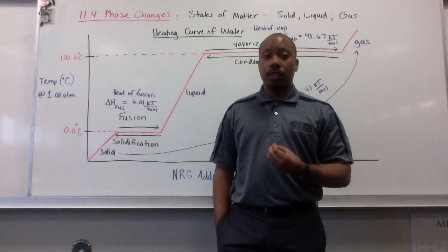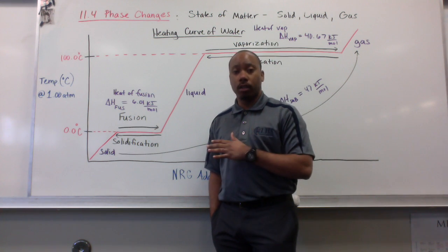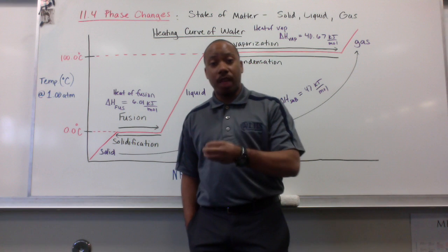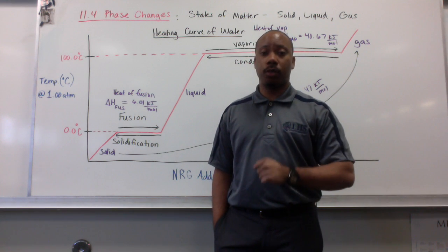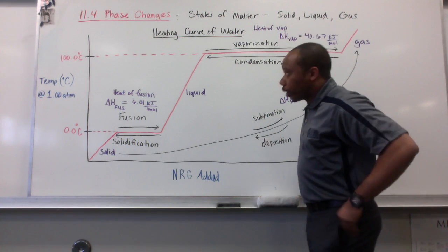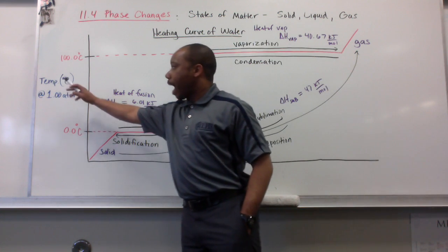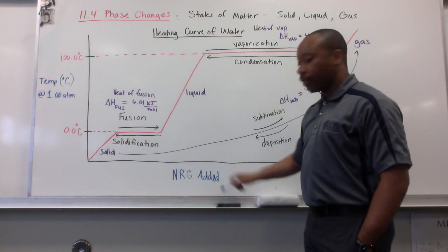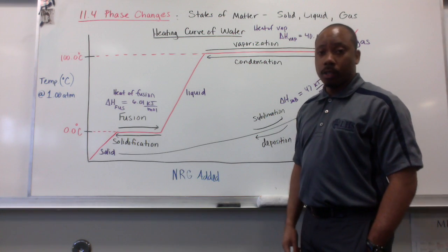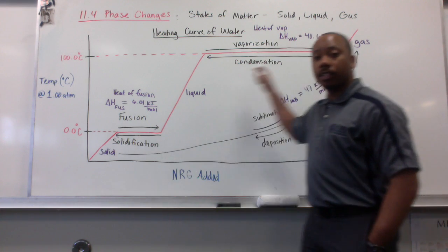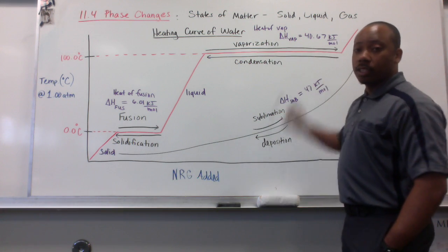Our example we're going to use today is a heating curve of water. So we're going to look at how states of matter go through phase changes and how that relates to enthalpy changes. So we are going back to heats. Now, our example is going to be water. So a heating curve of water involves an axis of temperature versus an axis of energy being added.